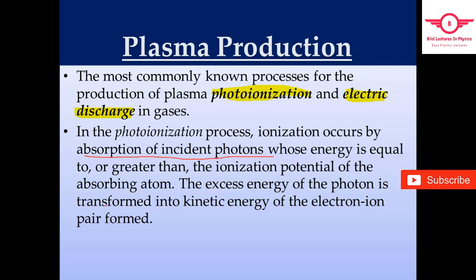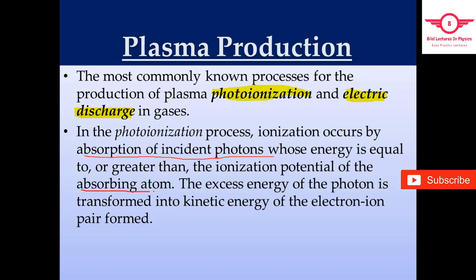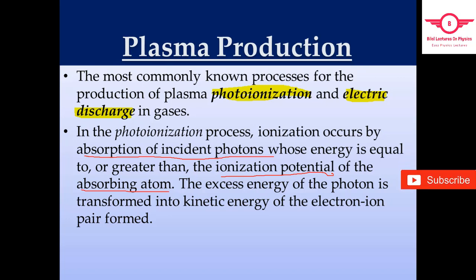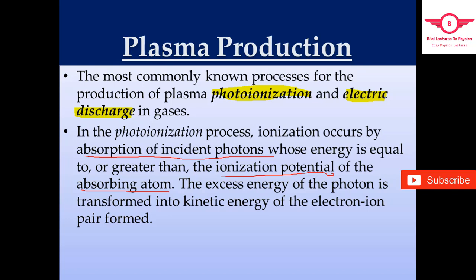The energy of the photon must be equal to or greater than the ionization potential of the absorbing atom. We need to provide external photons with sufficient energy. If the photon energy is more than the ionization potential, the atom will be ionized; otherwise it will not be ionized. The excess energy of the photon will be transferred in the form of kinetic energy of the resulting electron-ion pair.